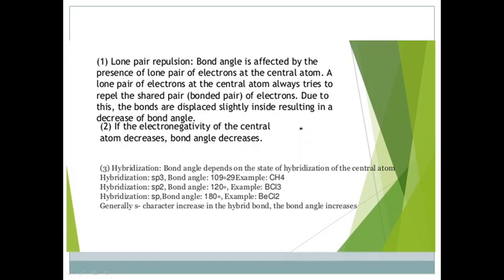For example, if we look at methane, H2O, and NH3—these examples show that H2O and ammonia have lone pairs of electrons. Where there are lone pairs of electrons, which have negative charge, they will try to repel.